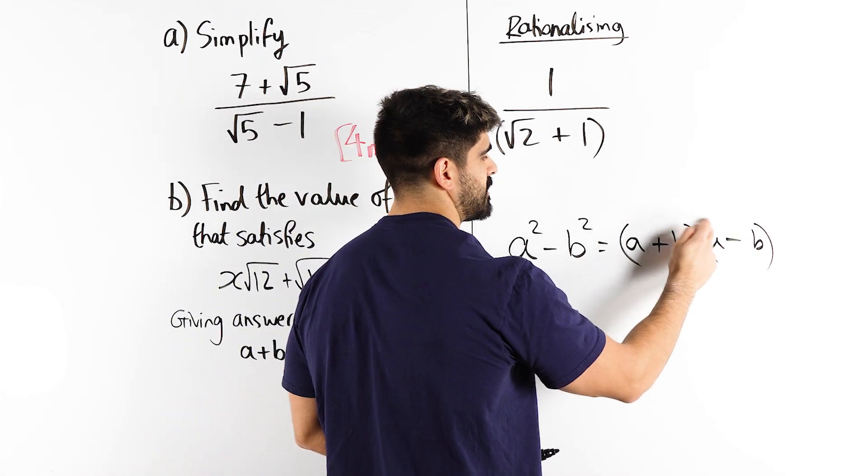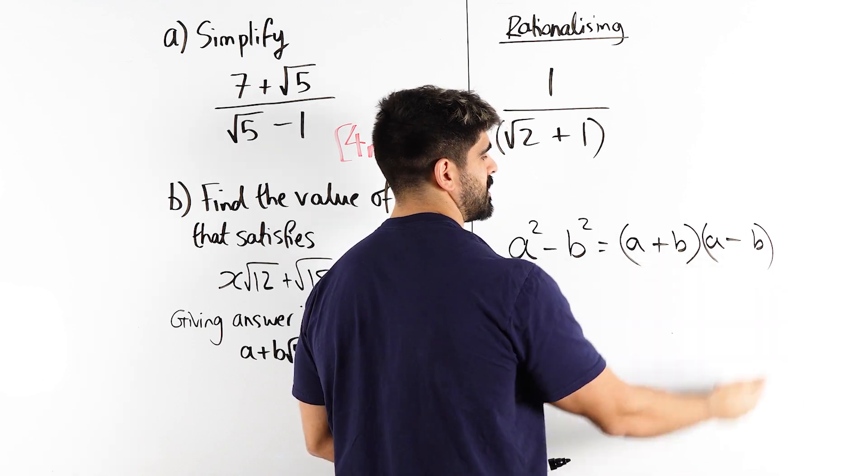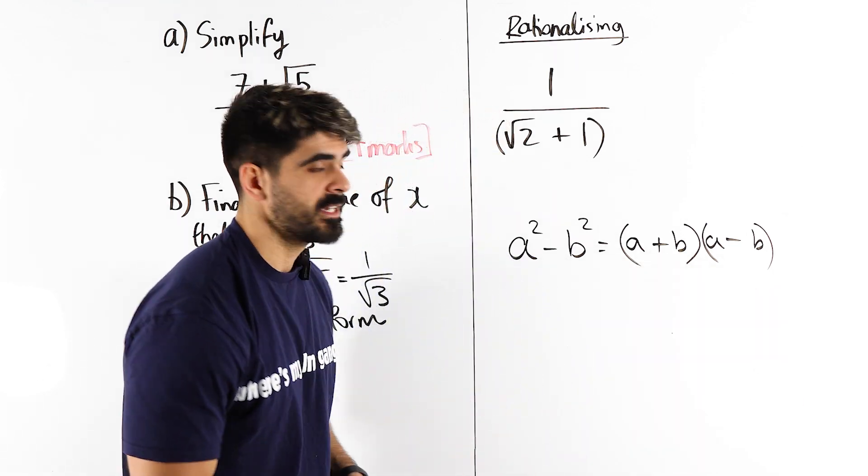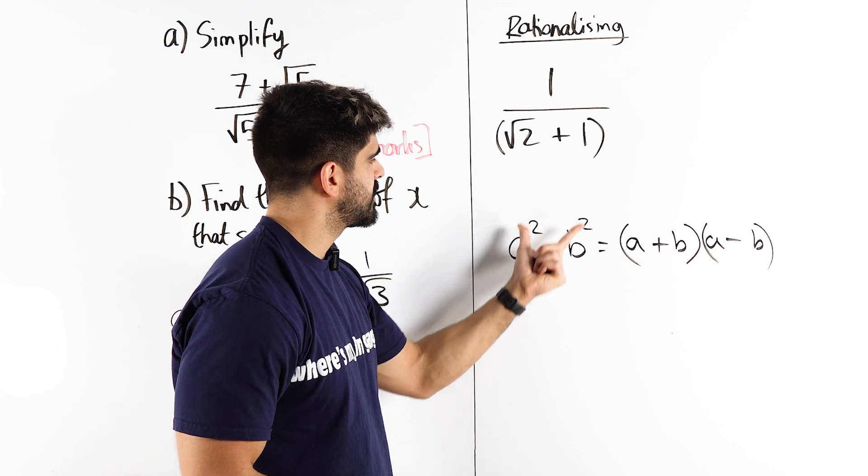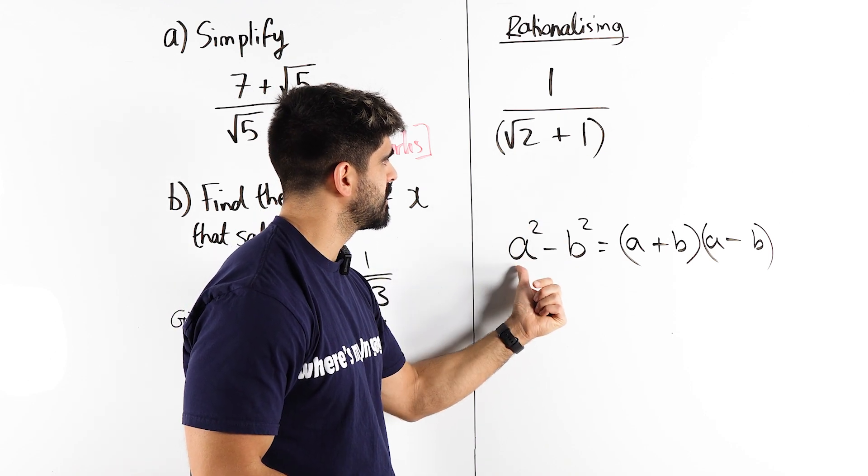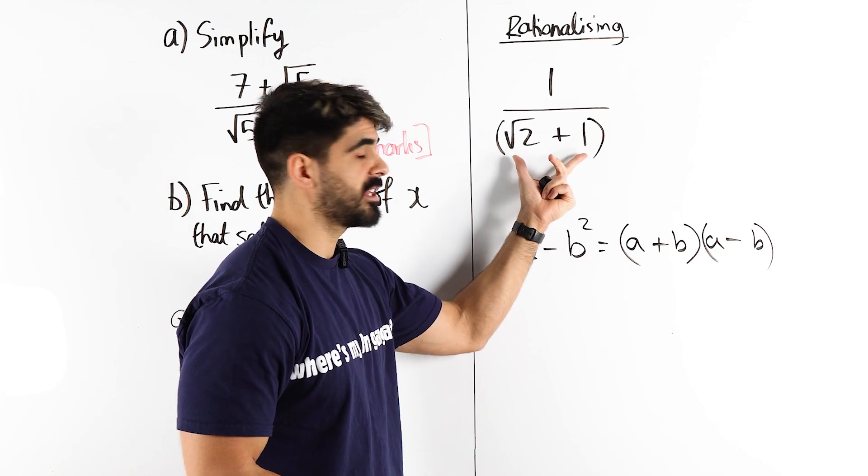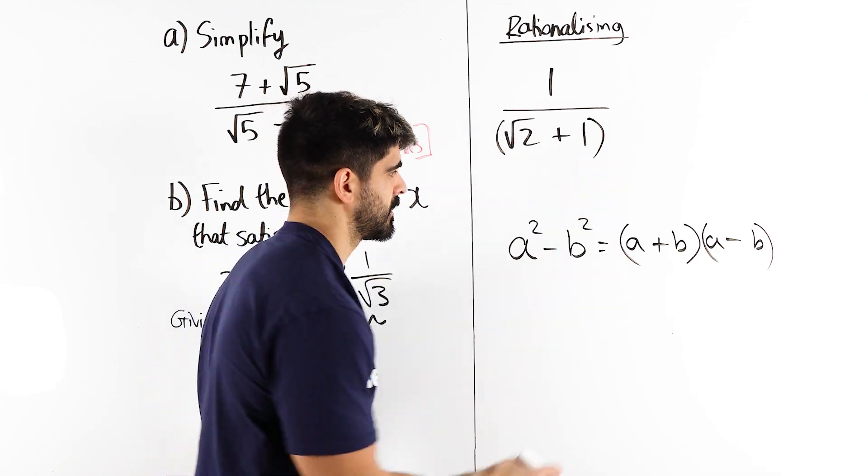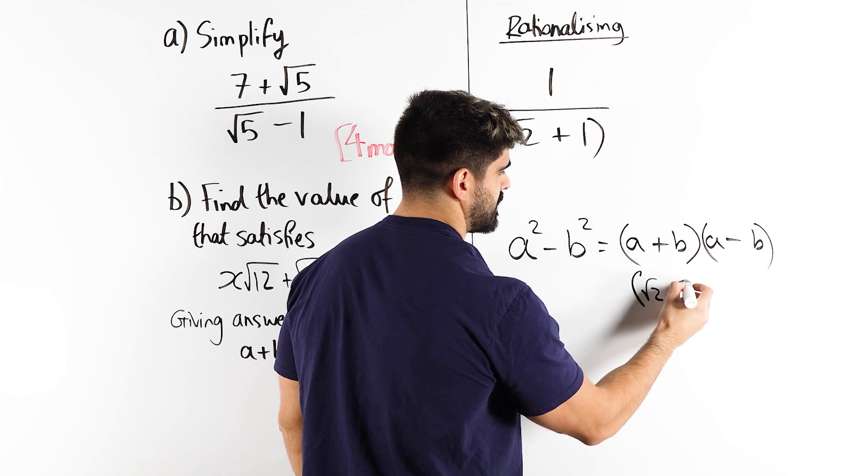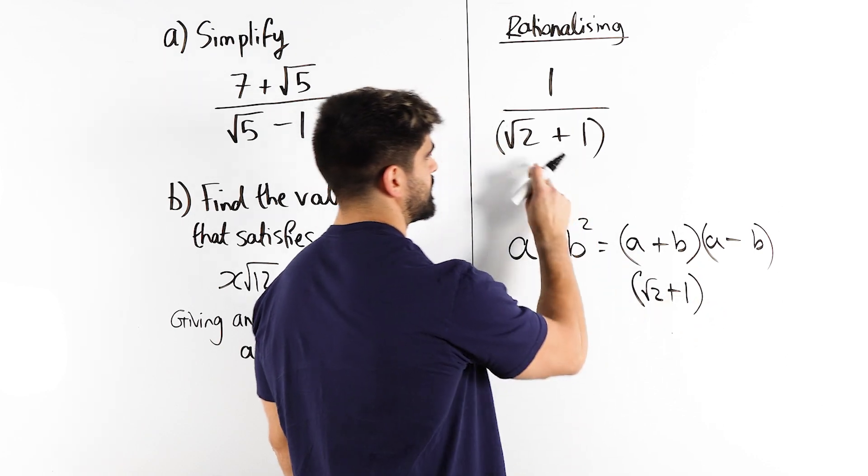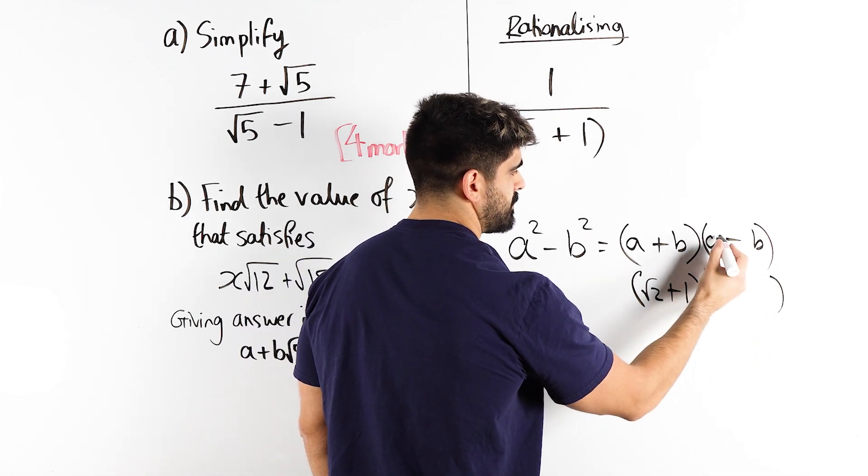If you expand this, you get a squared minus ab plus ab, which cancel minus b squared. How would this work with this example? Because look, we have this and somehow with this principle, we could be squaring this number and squaring this number. A and b are basically my root 2 and my 1. So let's write that here. A is root 2, b is 1, with a plus. It's the same as this, right?